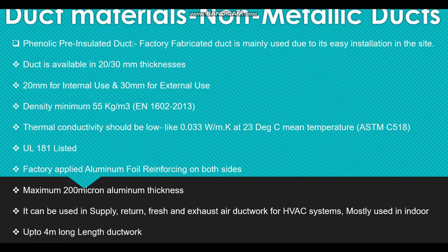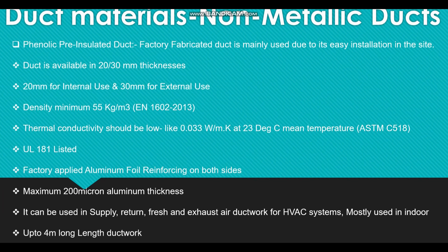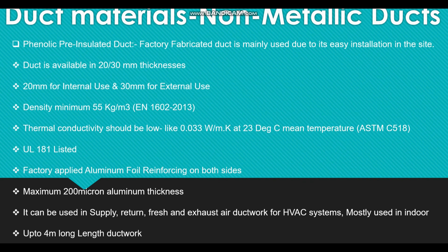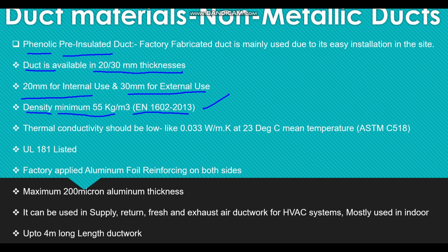Coming to non-metallic ducts, the first type is the phenolic pre-insulated duct. It is a factory-fabricated duct and is very easy to install. The phenolic duct is normally a fire-rated duct, available in 20 mm and 30 mm thicknesses — 20 mm for internal use and 30 mm for external use. The duct density is normally a minimum of 55 kg per cubic meter as per British standard EN 1602:2013. The thermal conductivity is approximately 0.033 W/mK at 23°C mean temperature as per ASTM C518. It is a UL 181 listed fire-rated duct with factory-applied aluminium foil reinforcing on both sides.